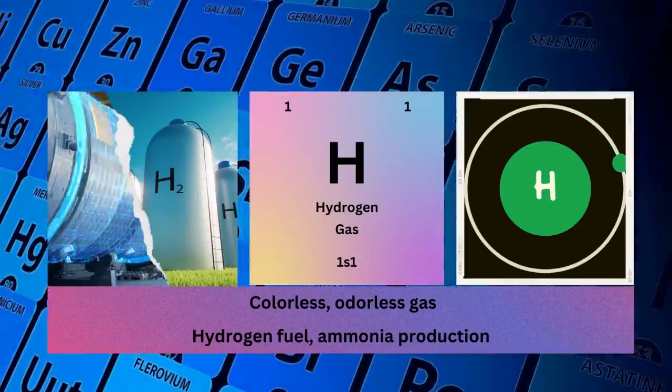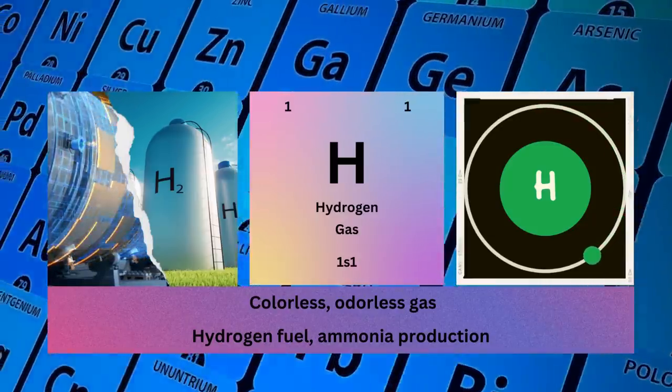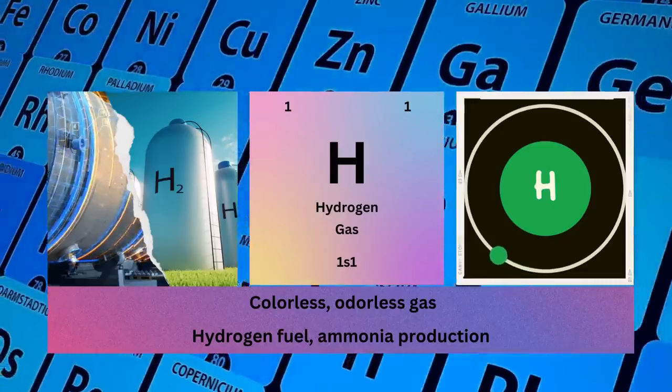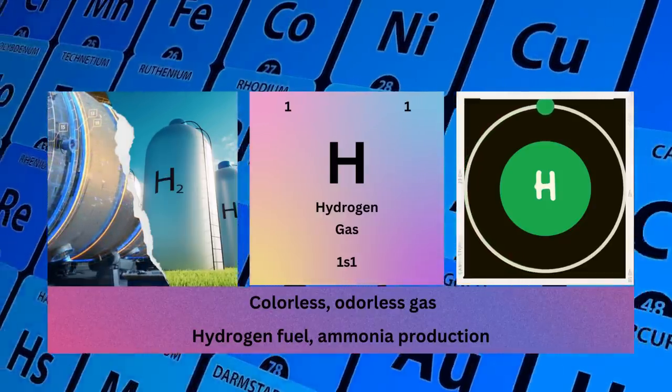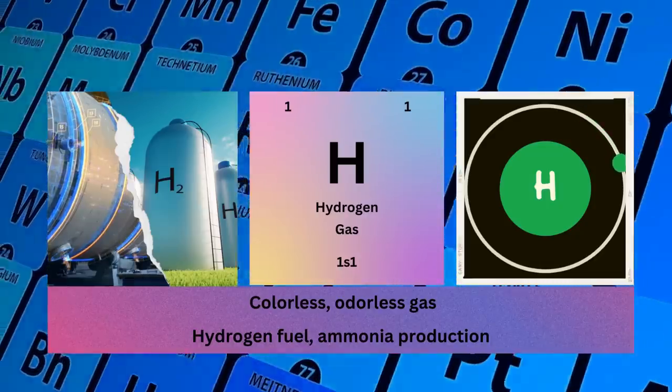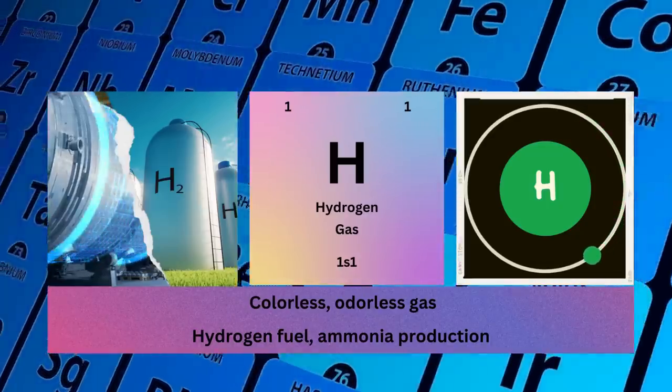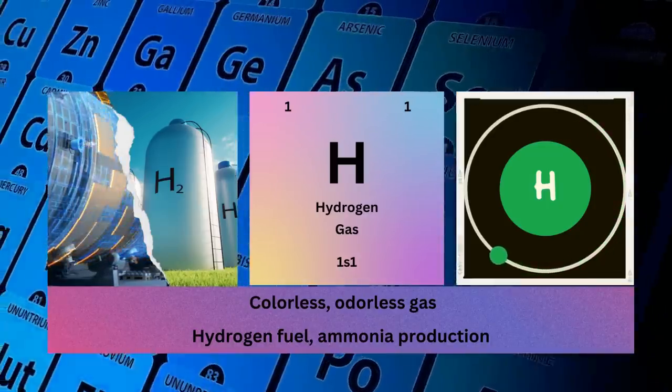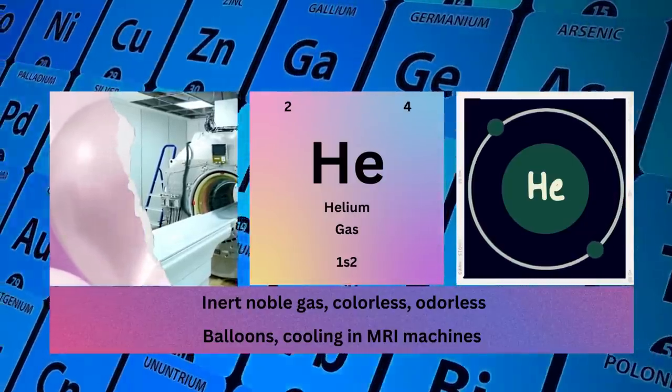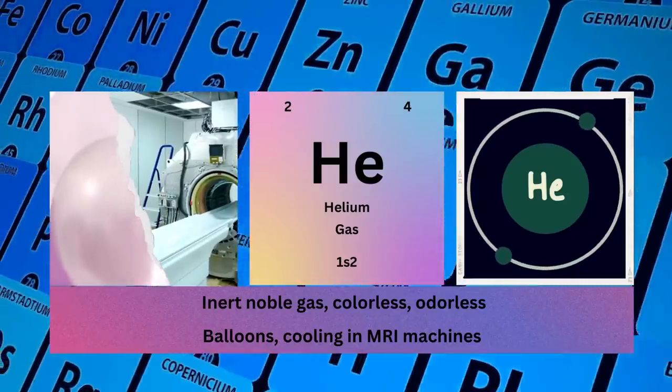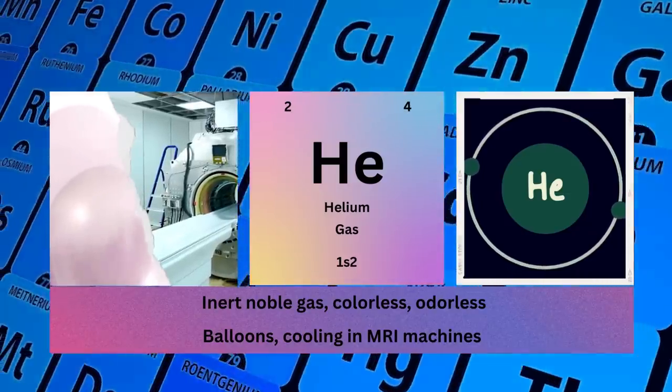Hydrogen: atomic number 1, mass number 1, symbol H, state gas, electronic configuration 1s1. Physical properties: colorless, odorless gas. Uses: hydrogen fuel and ammonia production. Helium: atomic number 2, mass number 4, symbol He, state gas, electronic configuration 1s2.